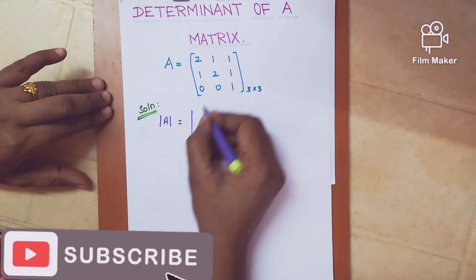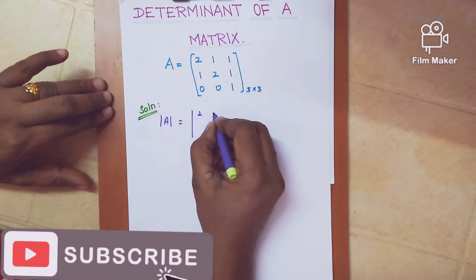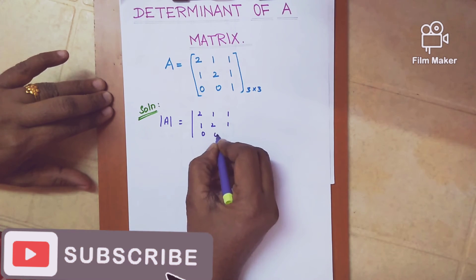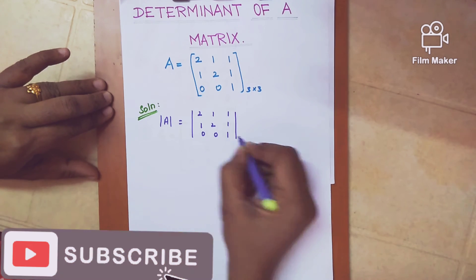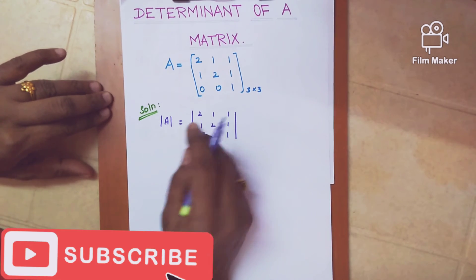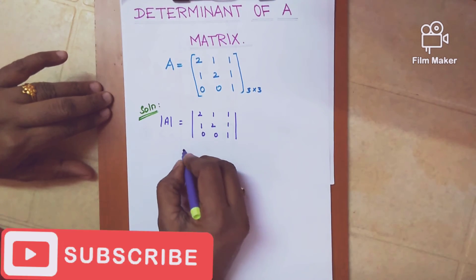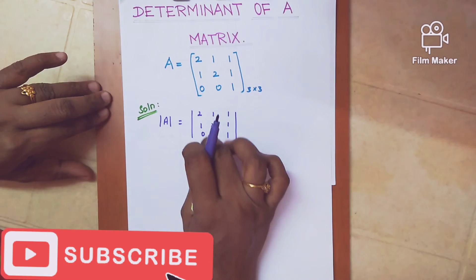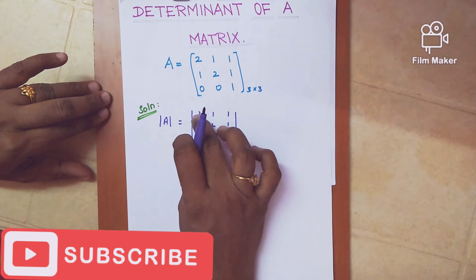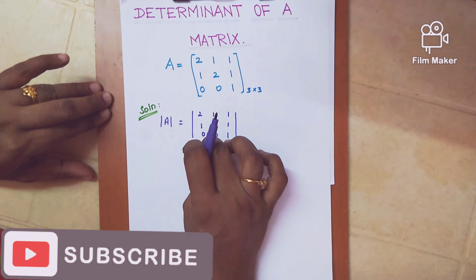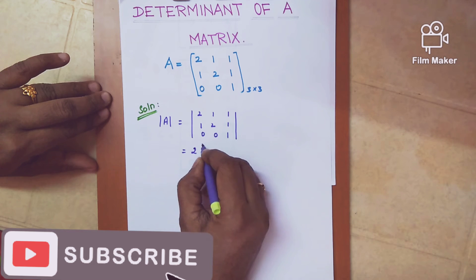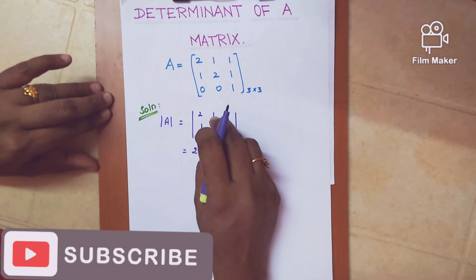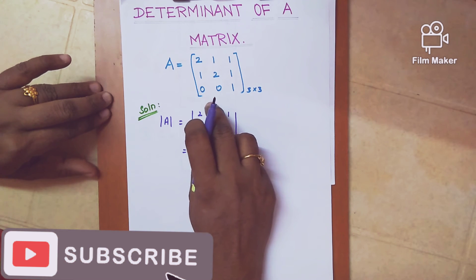Mod A is equal to the given matrix written in determinant form: 2, 1, 1 / 1, 2, 1 / 0, 0, 1. Now we expand along the first row. The first element is 2 — we leave the corresponding row and column, and take the remaining 2x2 minor: [2,1; 0,1].